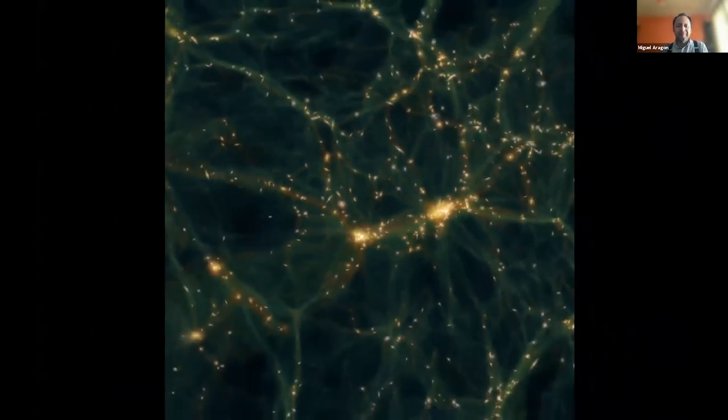Now the cosmic web has several components. Galaxies aggregate into clusters, very dense with tens of thousands of galaxies. And these clusters are joined by filaments. And together, clusters, filaments, and in three dimensions, walls, which are like membranes, they encompass these huge and vast regions we call voids that have nothing. Sometimes they have a few galaxies inside them.